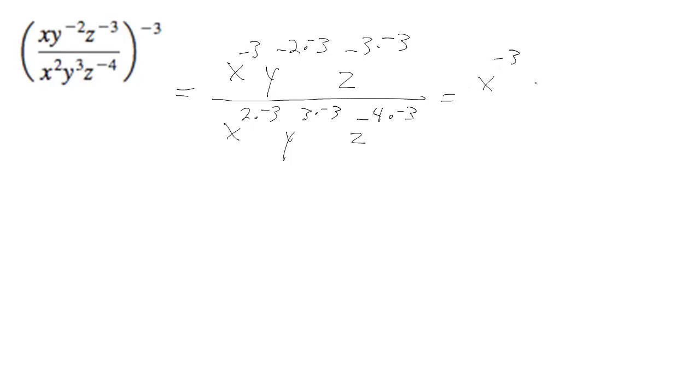So we get x raised to the negative third, y raised to the sixth, z raised to the ninth over x raised to the negative six, y raised to the negative nine, z raised to the negative twelve.